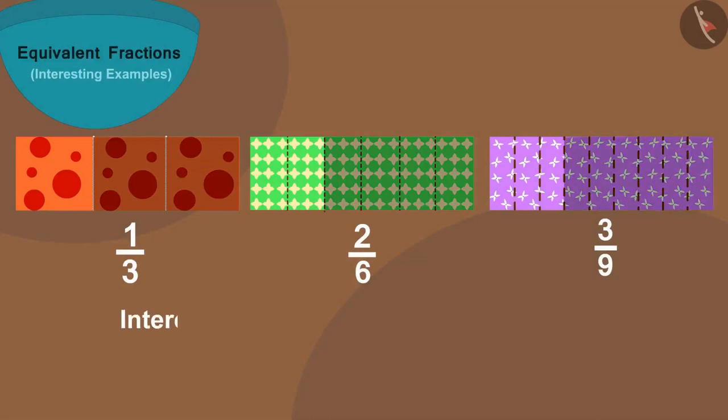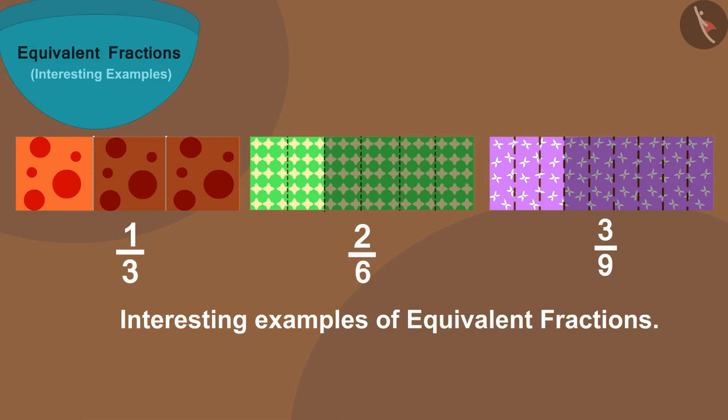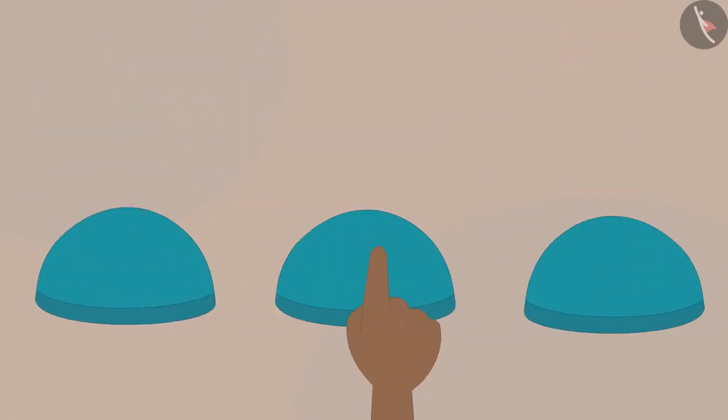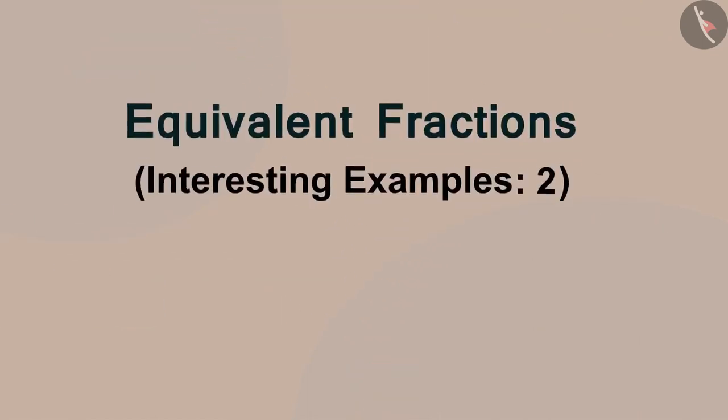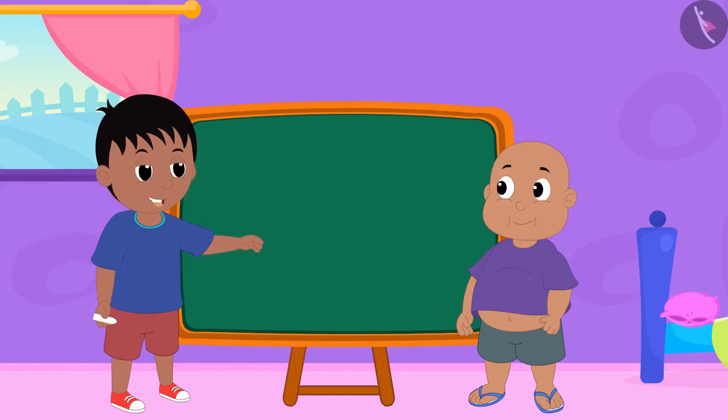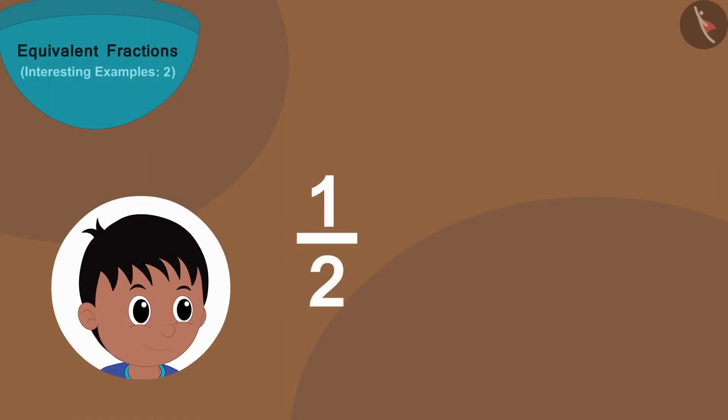In the last video we saw some interesting examples of equivalent fractions. In this video we will learn more about it through some more interesting examples. Today Raju and Bablu are playing a unique game. Raju will write a fraction, then he will write the number below the equivalent of that fraction, and Bablu will have to find the number above it.